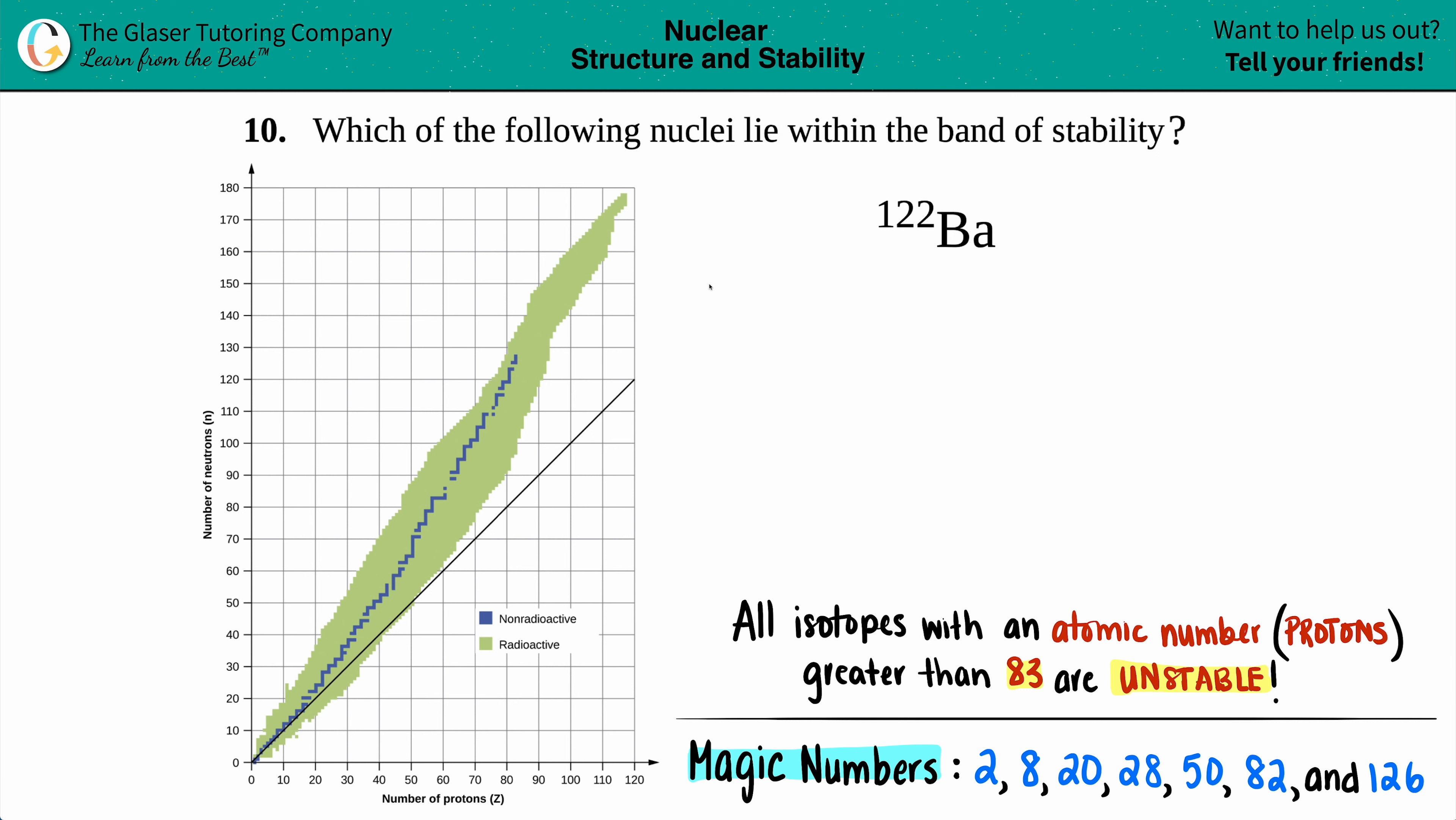Number 10. Which of the following nuclei lie within the band of stability? And then we have 122 with barium BA.